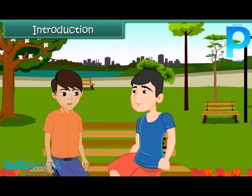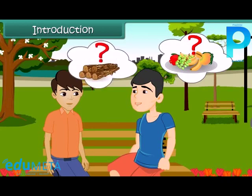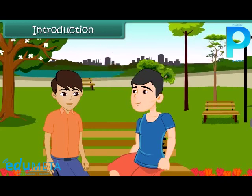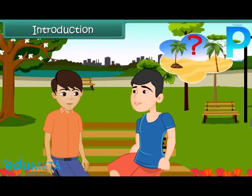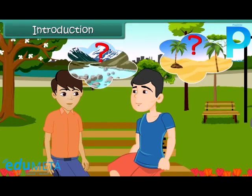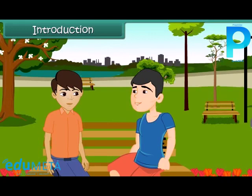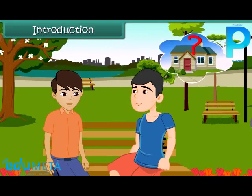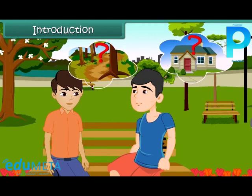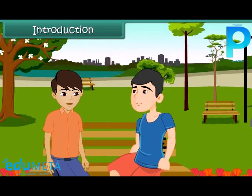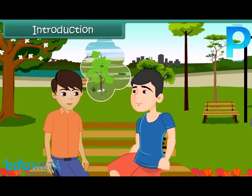What was the question? May I help you solve it? She asked what they are which give us fruits, they give us wood, which can grow on land as well as in water, which are found in homes as well as in forests. It's simple, dear. They are called plants.